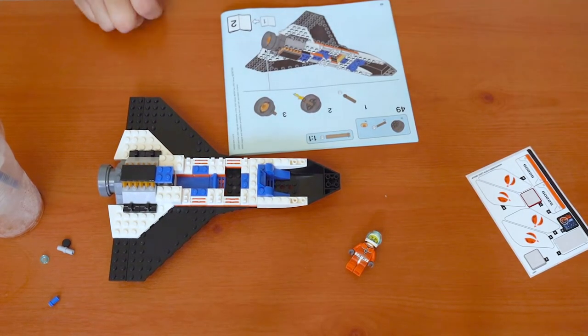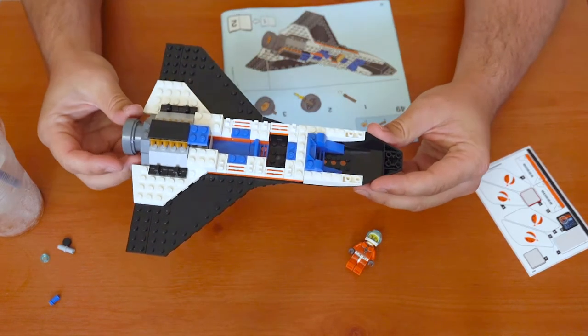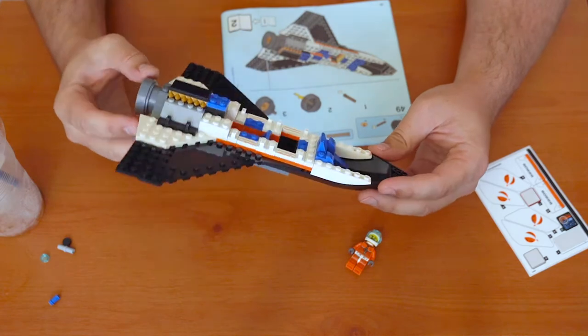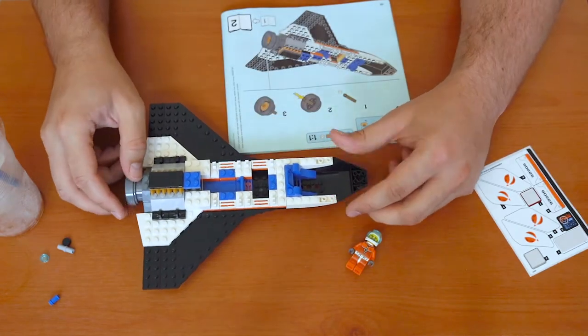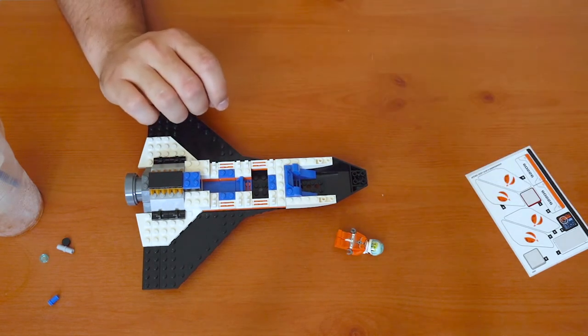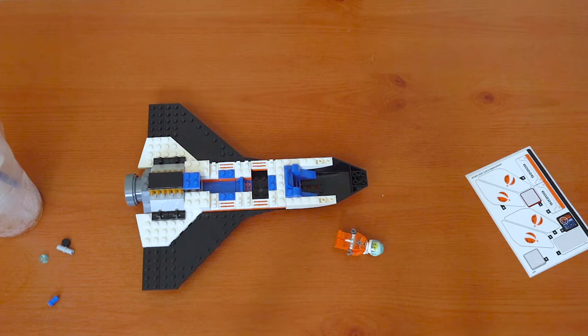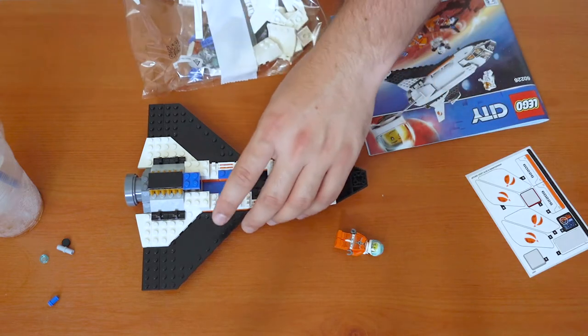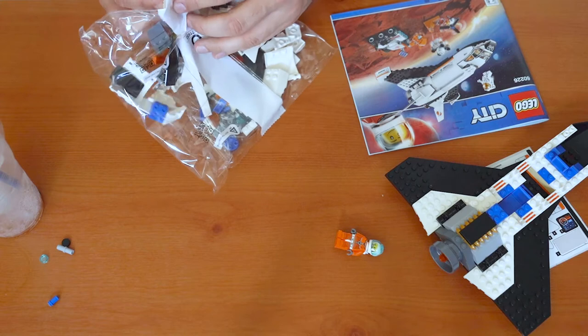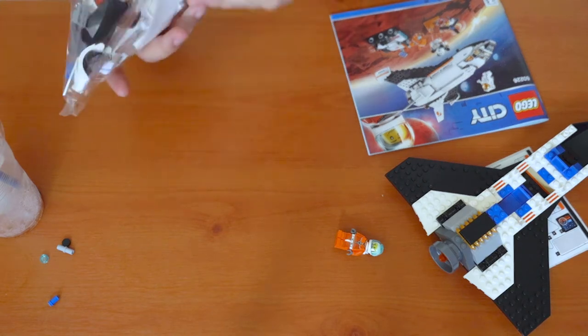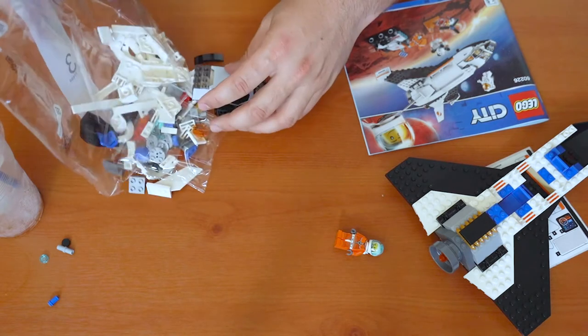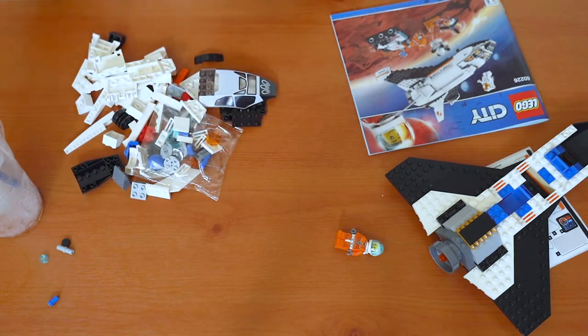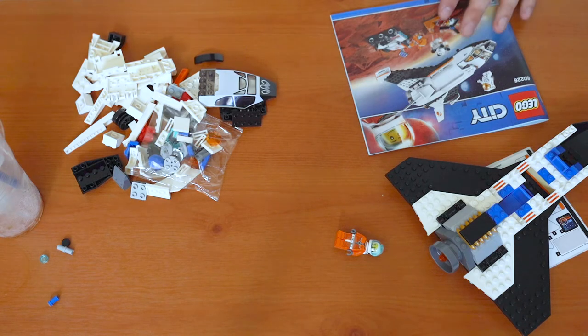Okay, so here's where we left off last time. You can see we've got basically the ship shape, right? Ship shape. Get rid of the number two instruction booklet. Get the number three instruction booklet and the bag.